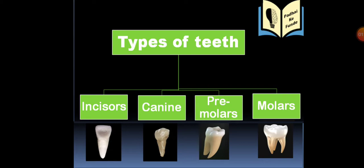The first type is incisors. They are shaped like a small chisel and have sharp edges that help us to bite into food. Whenever we sink our teeth into something such as an apple, we use our incisor teeth.